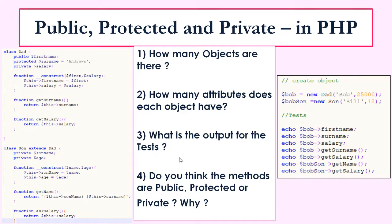The last question: do you think the methods are public, protected, or private? All methods are public methods because we want to have direct access to them. If they were not public, it would be much more difficult to call them and access our information. You can add 'public' in front of a method, but if you don't, it's still a public method by default.